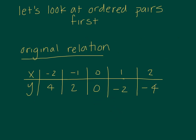So we're going to start by looking at ordered pairs first. And here is our original relation. We know a relation is any set of ordered pairs. It doesn't need to have one output for every input like a function does. But if you notice, it's just a bunch of ordered pairs: negative 2, 4; negative 1, 2; 0, 0; 1, negative 2; and 2, negative 4.